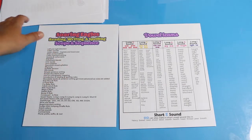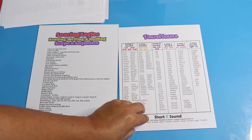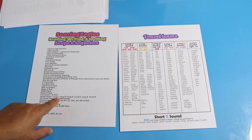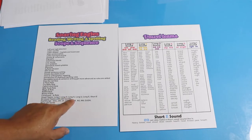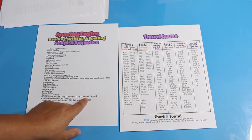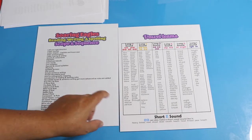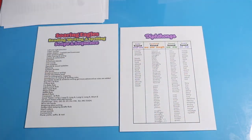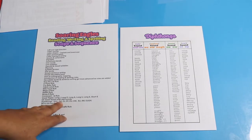Then comes the Consonant Plus LE rule, and after that, vowel teams. You'll have long I, long O, long A, long U, long E, and short E. Then you'll have a video on the EA vowel teams that make odd sounds.